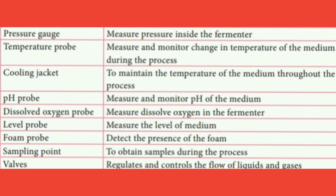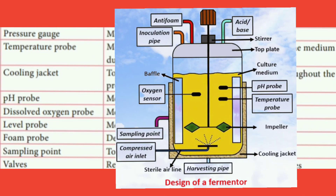Then there is the sampling point, which is a very important part used to obtain samples during the process for quality checks. Apart from this, there are different valves present, which are helpful in the regulation and control of the flow of liquids and gases during the entire fermentation process. These are some basic parts used in fermentation.